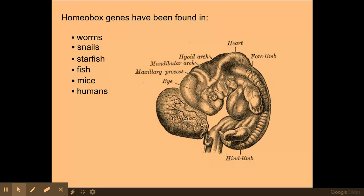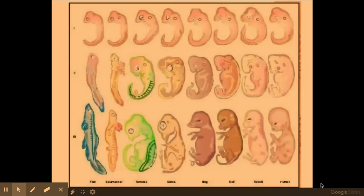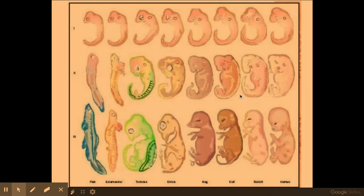Homeobox genes can be found in several different organisms. Examples of hox genes shown here are very similar across different organisms — the mouse and human have more copies compared to Drosophila. The very early embryo stages across organisms are very similar, and it is as development progresses that the embryo becomes more specialised to its function in terms of what that organism actually is.